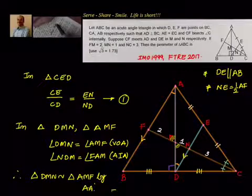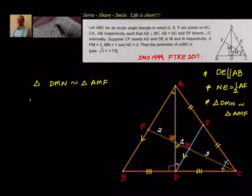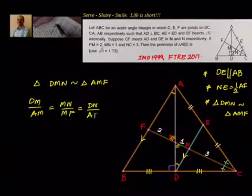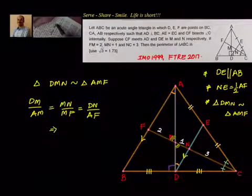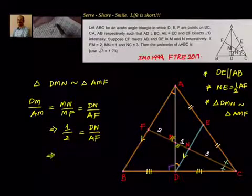From the similarity, corresponding sides are in the same ratio: DM divided by AM equals MN divided by MF equals DN divided by AF. We have MN equal to 1 and MF equal to 2, so the ratio is 1 to 2. Therefore DN divided by AF equals 1 by 2, which gives DN equal to AF by 2, i.e., DN equal to half of AF.